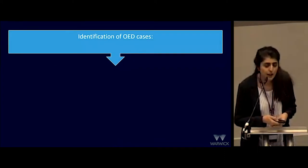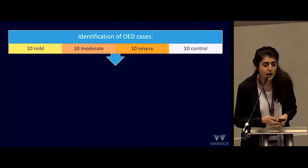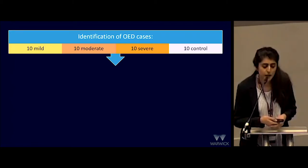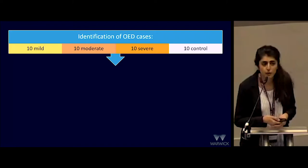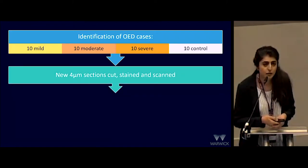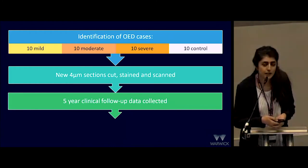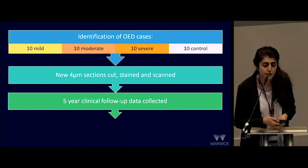We initially identified varying grades of oral dysplasia from the tissue archive database in the oral maxillofacial pathology department in Sheffield. This included mild, moderate, and severe, as well as normal and cancerous epithelium. New sections were then cut and stained with H&E and scanned into digital whole slide images. Five-year clinical follow-up data was collected to identify which cases had transformed into cancer and to identify the different risk factors for the patients.